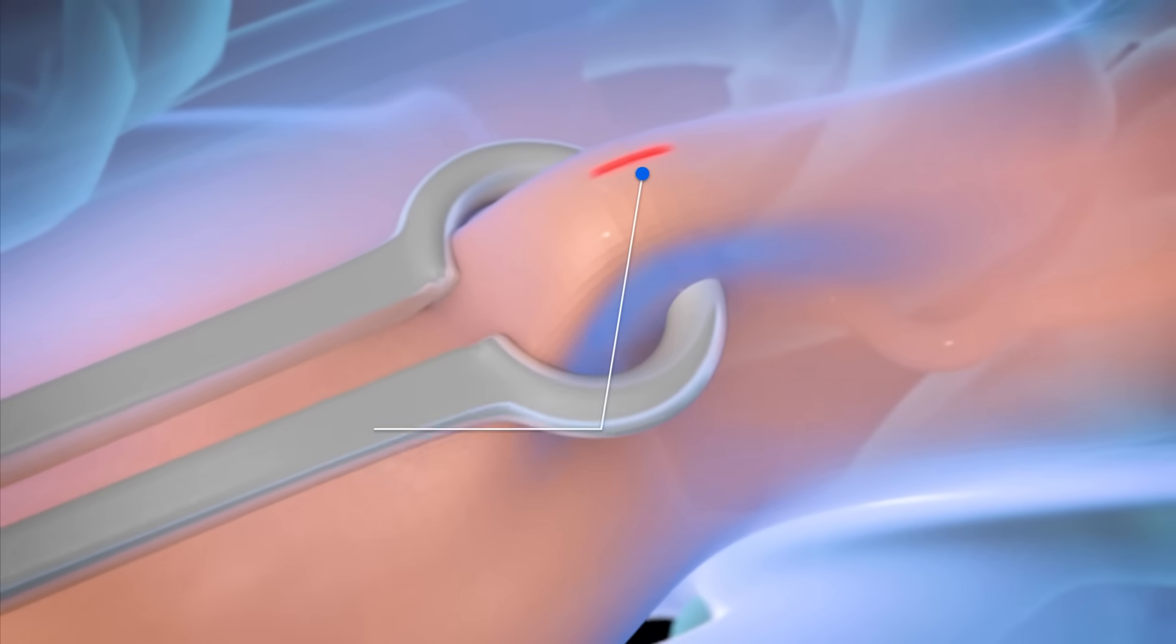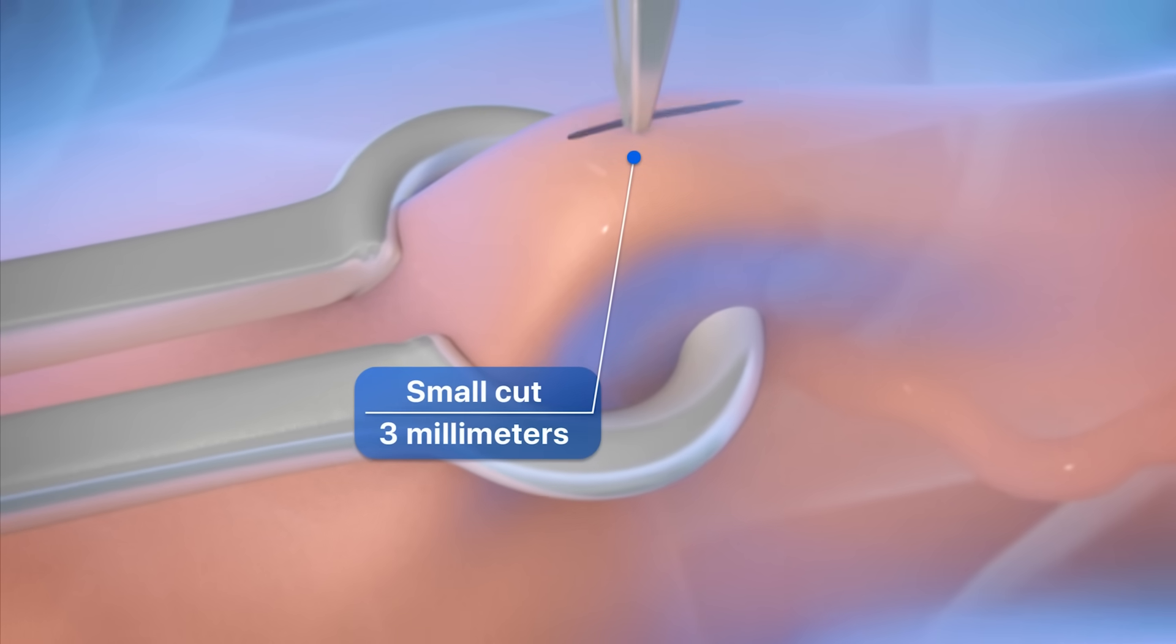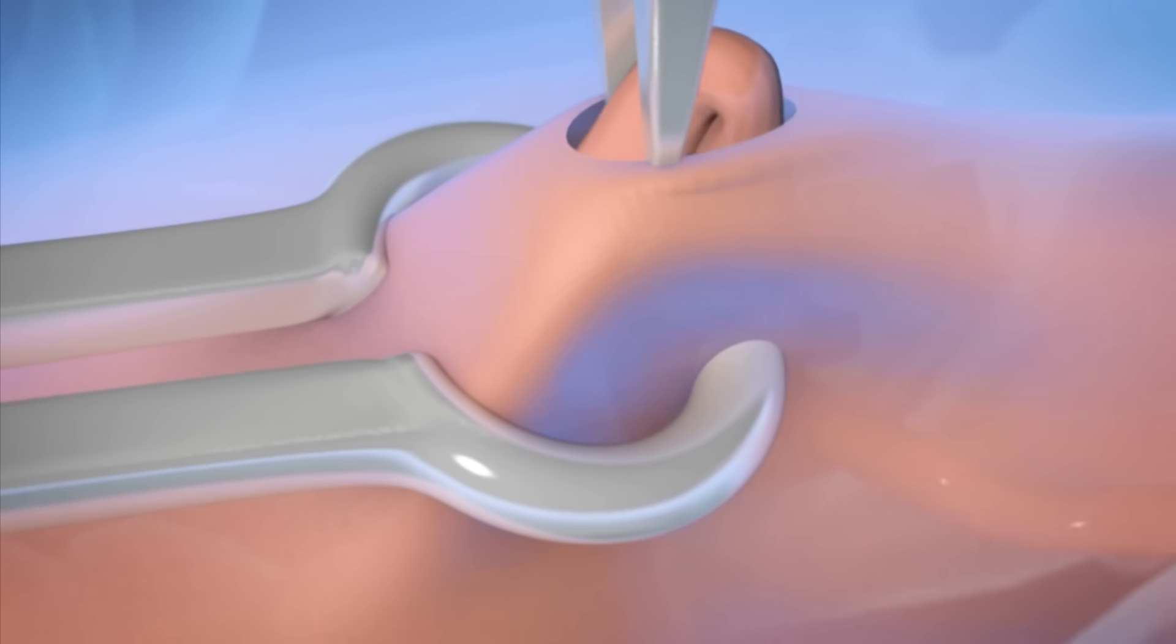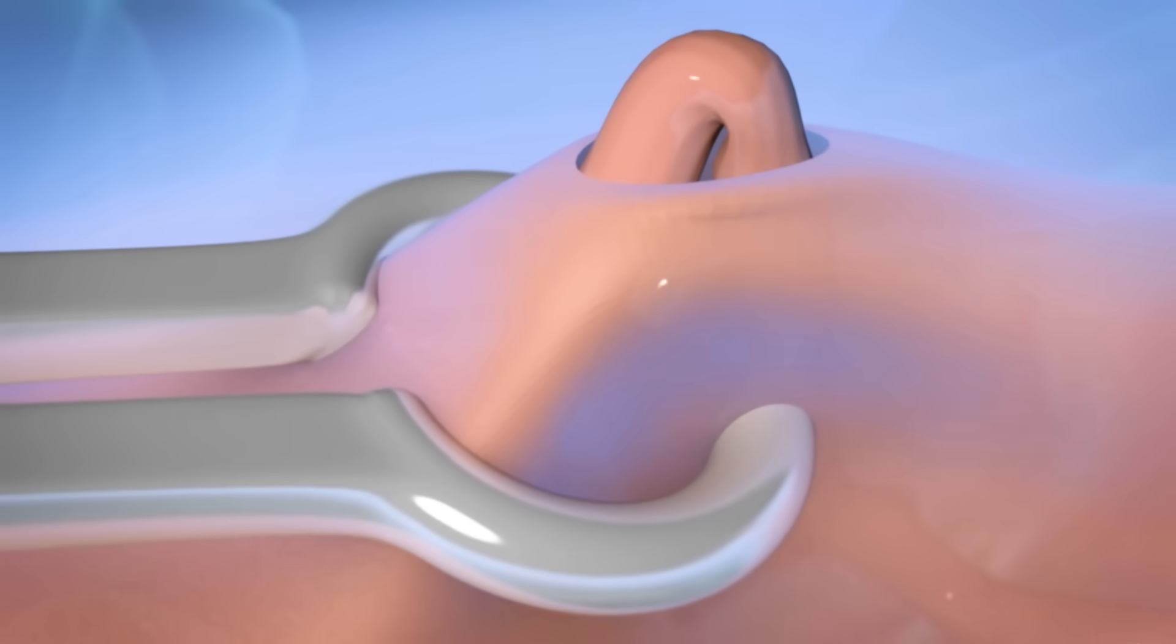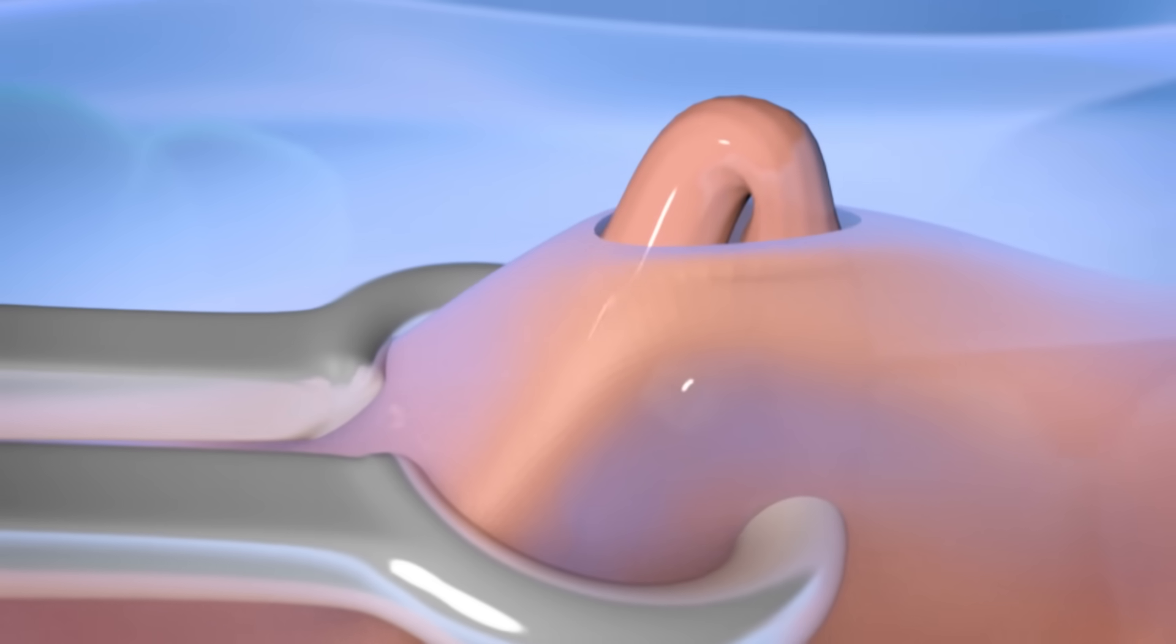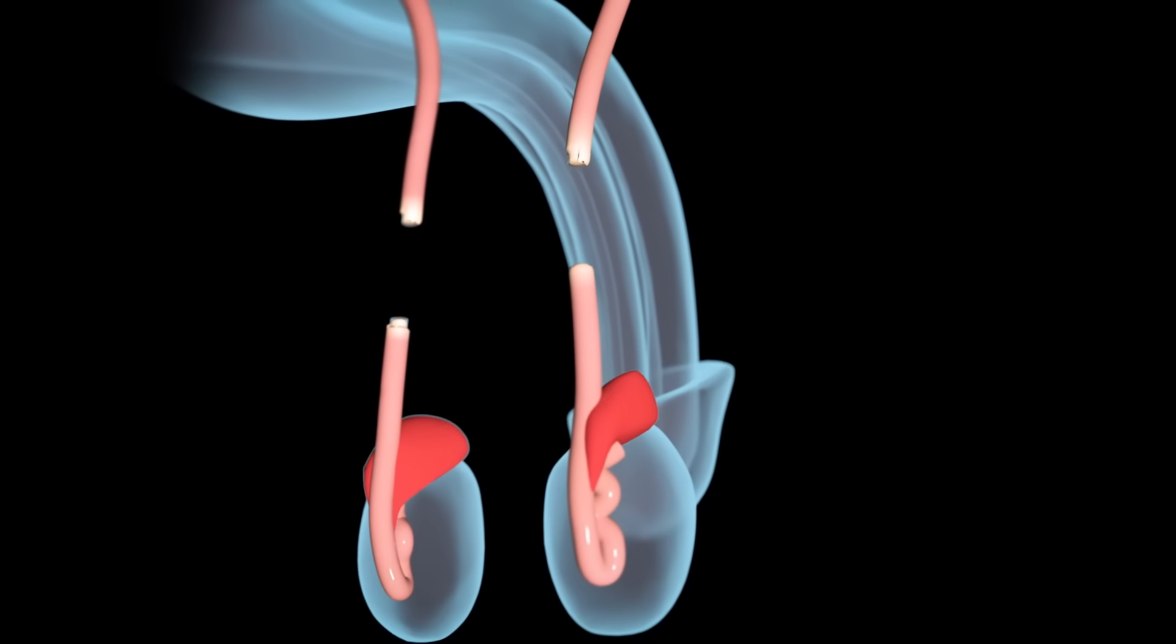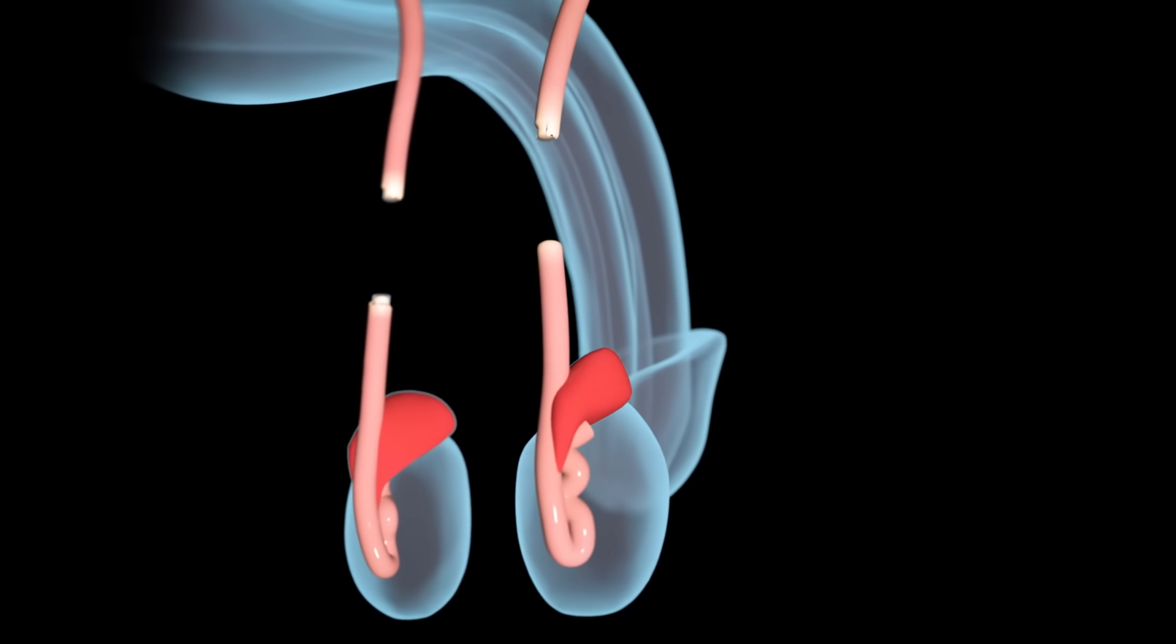A vasectomy can also be performed without a scalpel. Instead a special ring clamp is used that will hold and expose the vas deferens. From this moment on the procedure is the same as that of conventional vasectomy. A ring clamp vasectomy usually offers faster healing and fewer complications but is just as effective as a scalpel vasectomy.